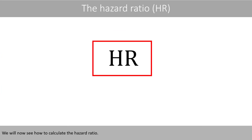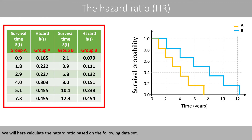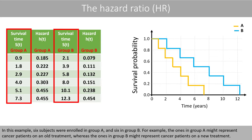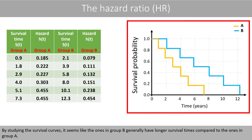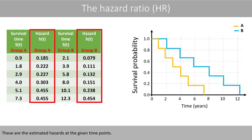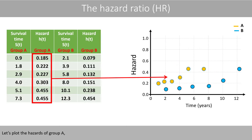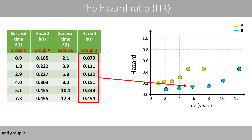We will now see how to calculate the hazard ratio, using the following dataset. In this example, six subjects were enrolled in group A and six in group B. For example, the ones in group A might represent cancer patients on an old treatment, whereas the ones in group B might represent cancer patients on a new treatment. By studying the survival curves, it seems like those in group B generally have longer survival times compared to those in group A. These are the estimated hazards at the given time points — let's plot the hazards of group A and group B.